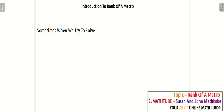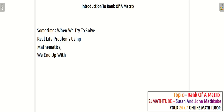In mathematics, we try to solve many real life problems by using mathematical models. And sometimes when we try to solve real life problems, we may end up with linear equations — simultaneous linear equations — that means there will be more than one linear equation.